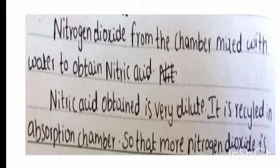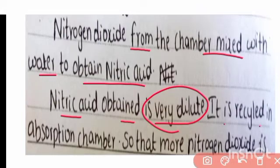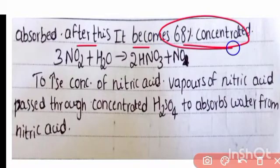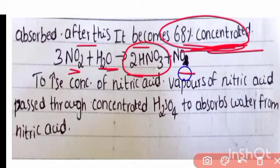The nitrogen dioxide from the oxidizing chamber is mixed with water to obtain nitric acid. This nitric acid obtained is very dilute, so it is recycled in the absorption chamber so that more nitrogen oxide is absorbed. After this process, it becomes 68 percent concentrated nitric acid.